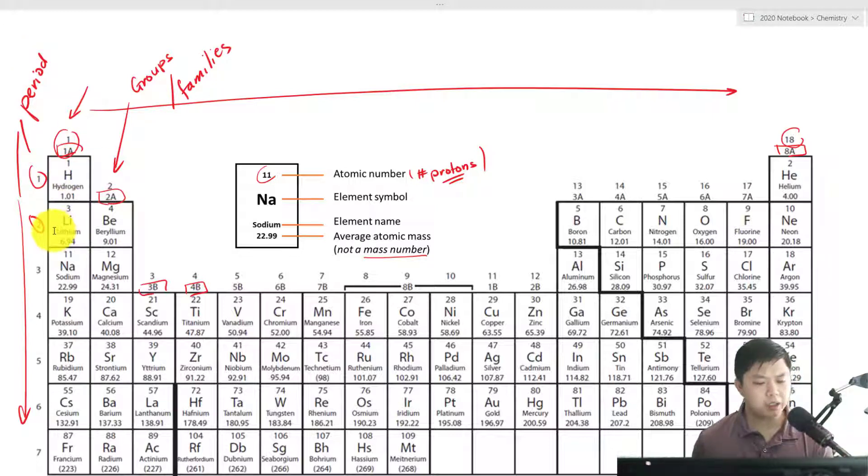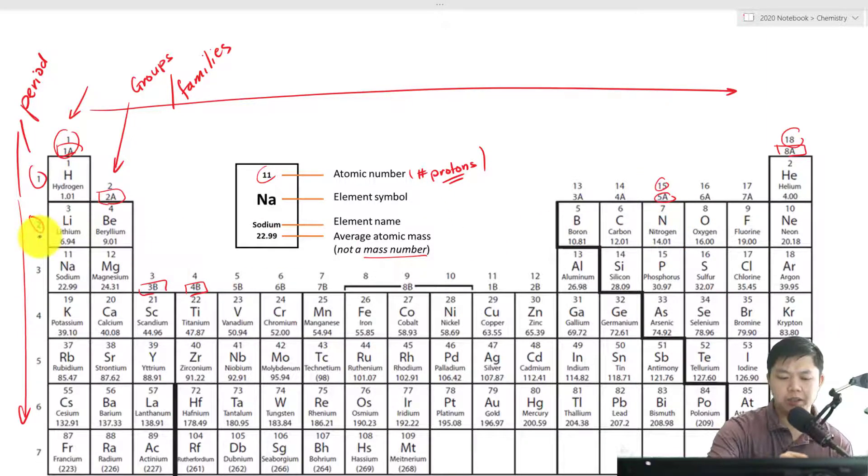So let's do a practice problem. For example, right here, nitrogen. It has an atomic number of 7. Nitrogen is represented by the letter N, and the average atomic mass is 14.01. It is in group 5A or 15, and in period number 2.